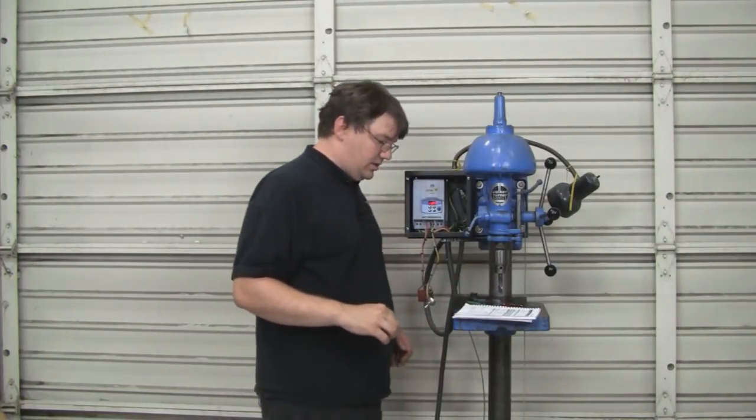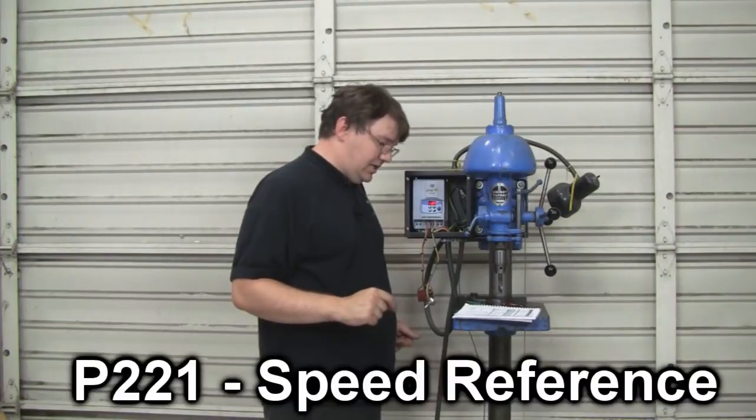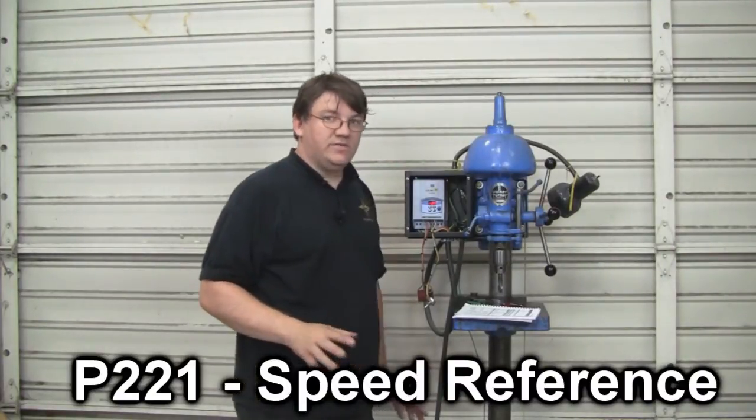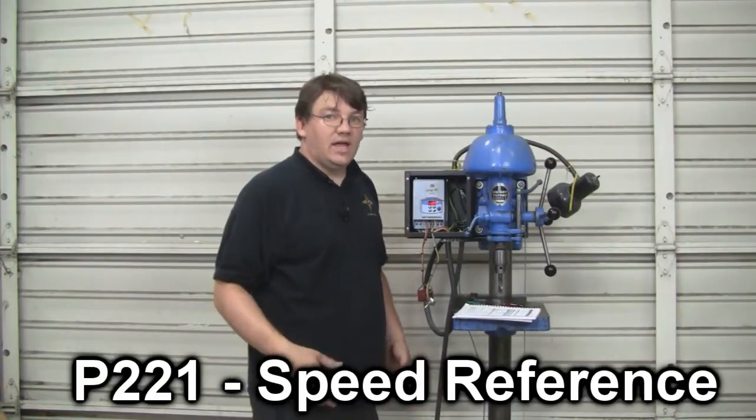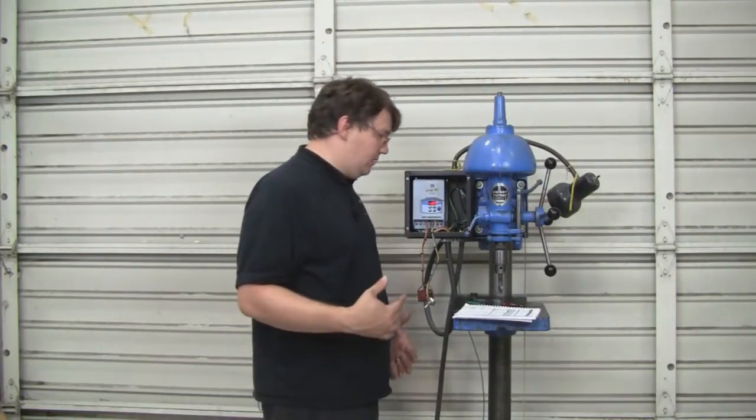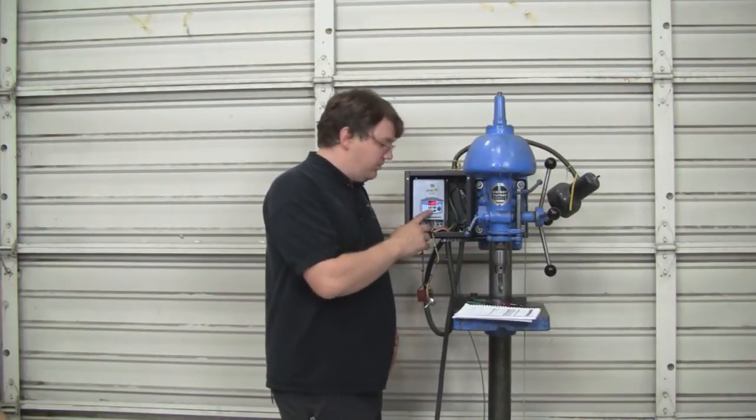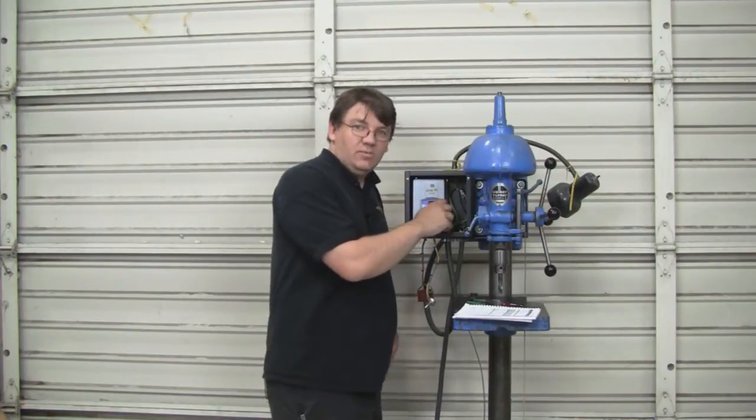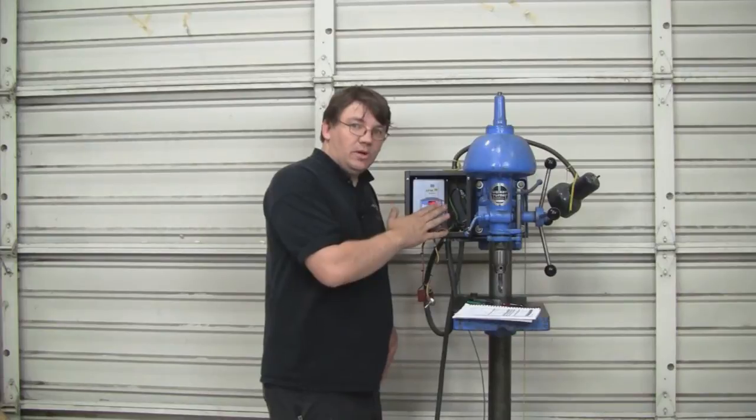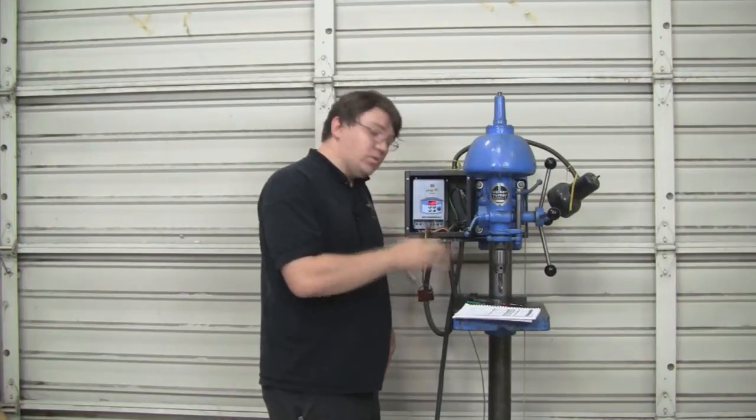The first one you're going to want to set, this is P221, which is your speed reference. This tells the VFD where it's getting how fast it should go. Normally that would be via the up-down buttons on the keypad, or if you had one with the built-in potentiometer, a lot of times it will be programmed to do that. But in this case, since we want it on the outside...